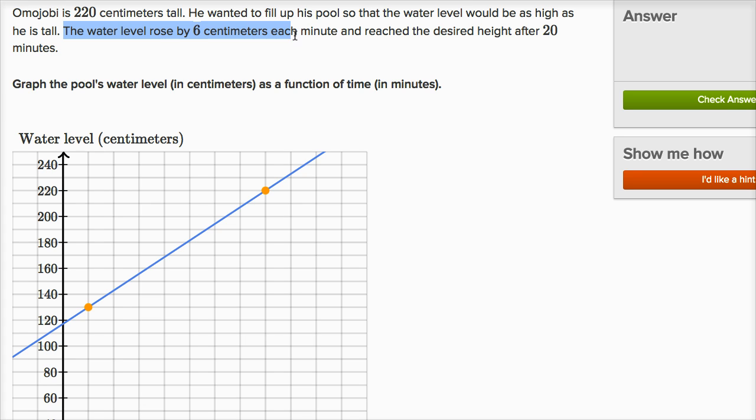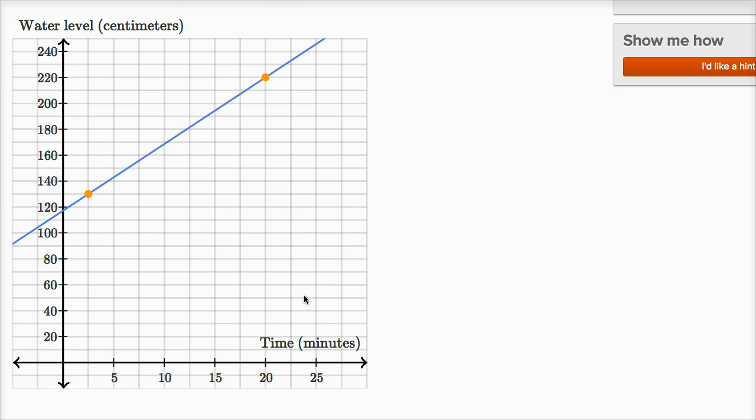The water level rose by six centimeters each minute. It rose by six centimeters each minute. So at 20 minutes, we know we're at 220. And if we rose six centimeters each minute, where would we have been, let's say, 10 minutes ago? So where would we have been at time 10?